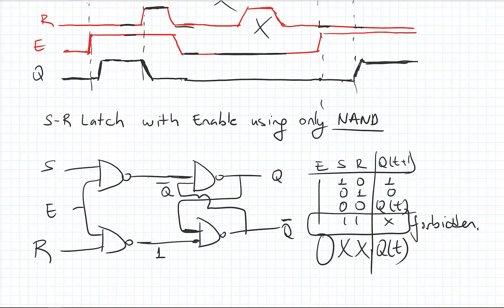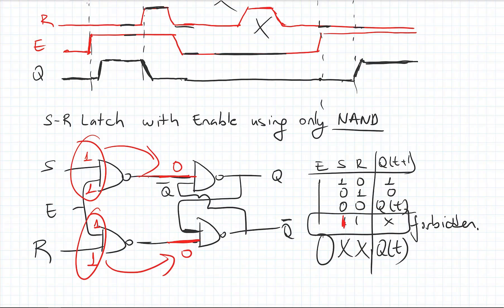Let's review the forbidden case one more time. The forbidden case occurs when both NAND gate inputs are zero at the same time. To make an input zero, I need a one and a one at that NAND gate. So if I make S=1 and R=1 with enable=1, one and one gives zero, and one and one gives zero — both Q and Q-not would be zero simultaneously, which is the forbidden state.